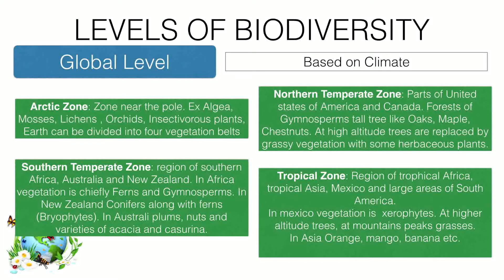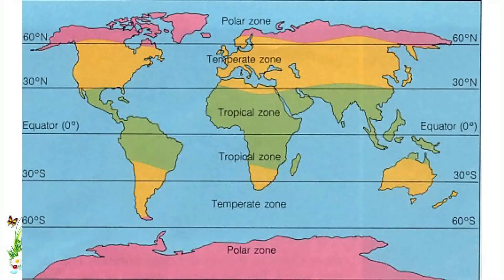Tropical zones include regions of tropical Africa, tropical Asia, Mexico, and large areas of South America. The main plants here include orange, mango, banana, and others. On the map, polar zones are marked in red, temperate zones in yellow, and tropical zones in green.